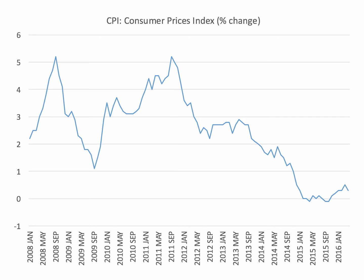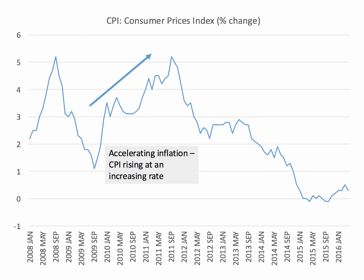This data shows the annual rate of inflation in the UK right up to the latest figures, which is April 2016, when inflation was 0.3%. You can see that the rate of inflation varies from month to month — this is the annual 12-month change in consumer prices. When the rate of inflation is increasing, as it was in 2009 into 2010, we call this an accelerating inflation period.